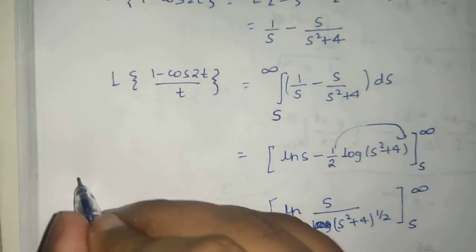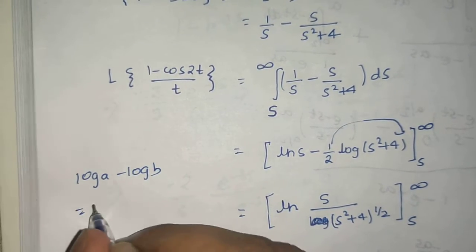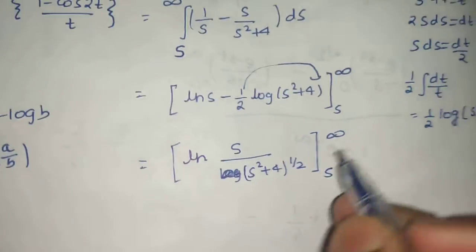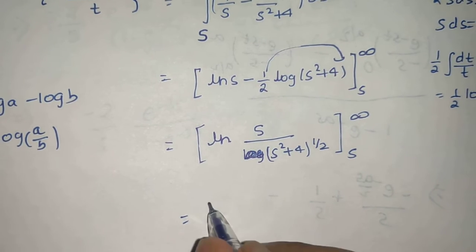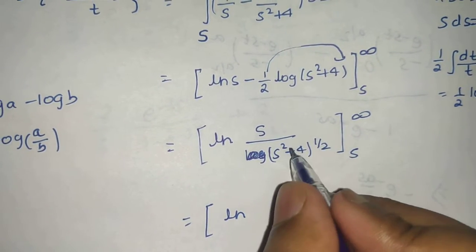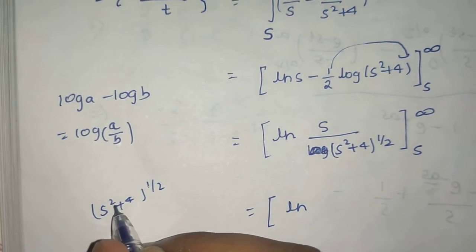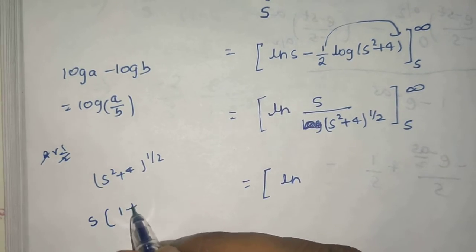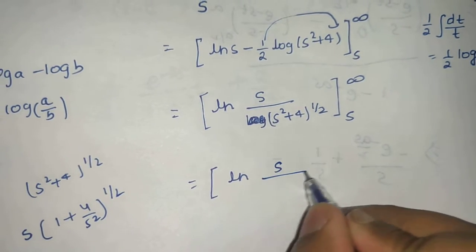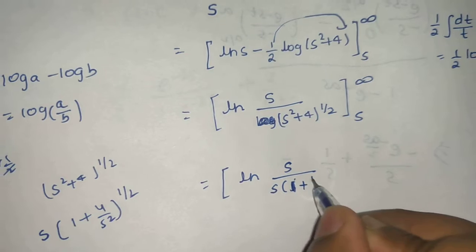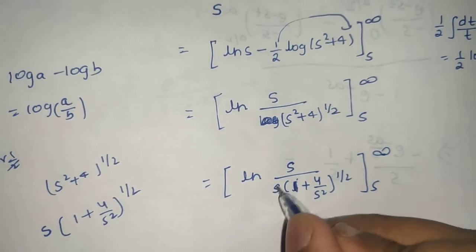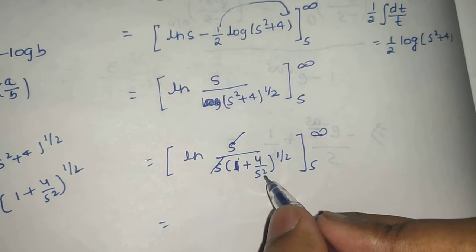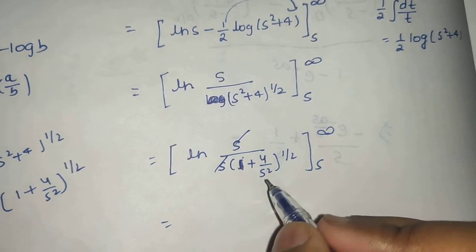We use the log property: log a minus log b is log(a/b). Before that, we send the power half into the expression. We can take s² out of (s² + 4)^(1/2) and write it as s times (1 + 4/s²)^(1/2). So s cancels, leaving ln of (1 + 4/s²)^(1/2), evaluated from s to infinity. Putting in infinity, 4/∞ becomes 0, so we get 1, and 1 to the power half is 1.